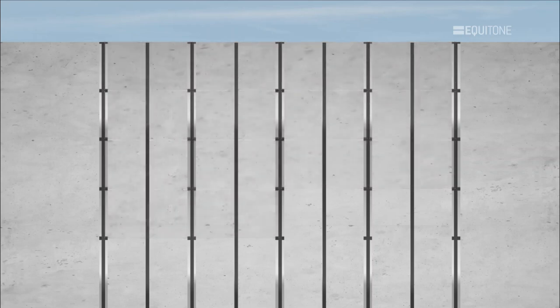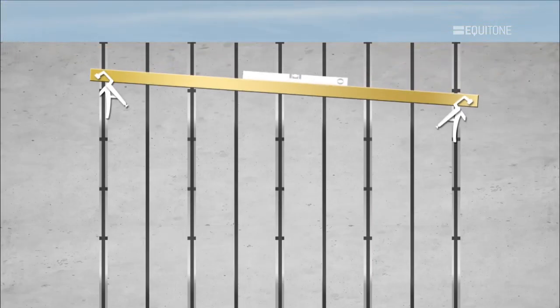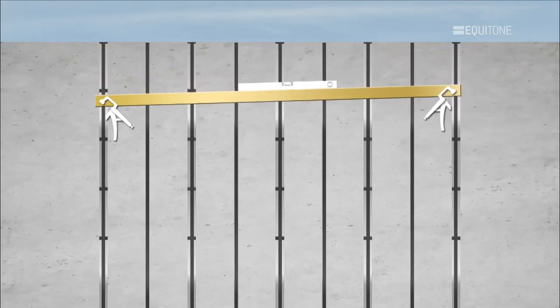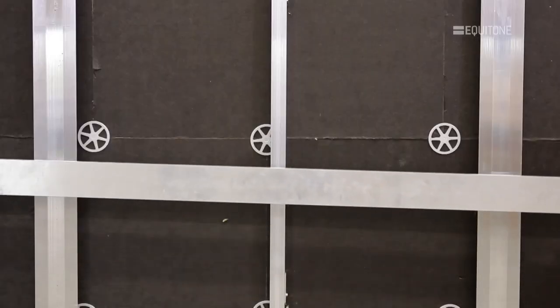Starting at the top, mark the bottom edge of the top panel on the profiles. Place a temporary rail against the frame and level. Temporarily clamp the rail to the profiles.